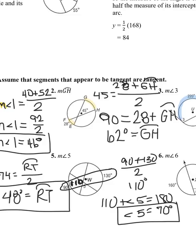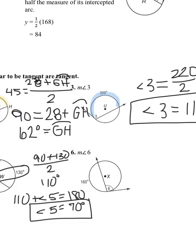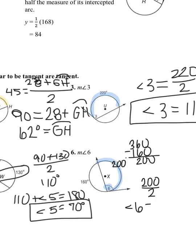The last question on the front of our notes is angle six. We know a circle has 360 degrees. I need to relate angle six to its intercepted arc. I have 160 degrees on the left of the circle, so to figure out the intercepted arc on the other side, I do 360 minus 160, which is 200 degrees. Now to get the angle: 200 divided by two. Angle six equals 100 degrees.